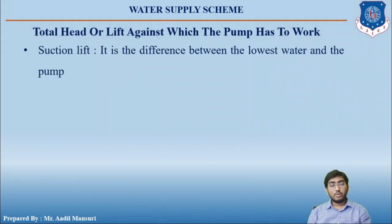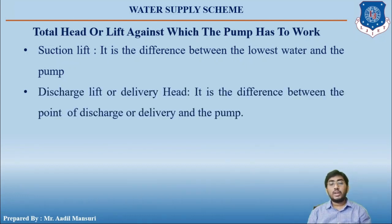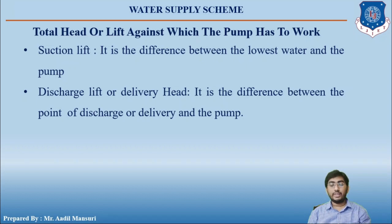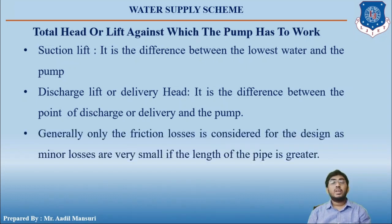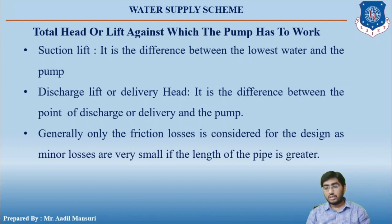The suction head is the difference between the lowest water level and the pump. The discharge or delivery head is the difference between the point of discharge and the pump. Generally, only the frictional losses are considered for the design, as minor losses are very small, especially when the length of the pipe is greater.